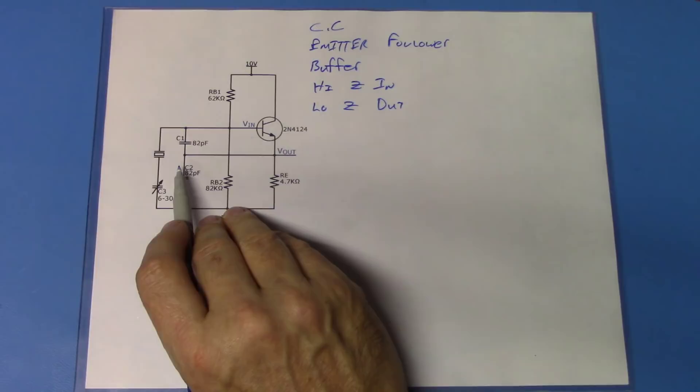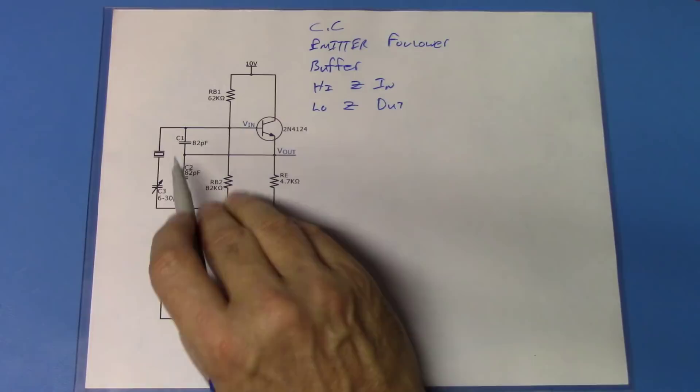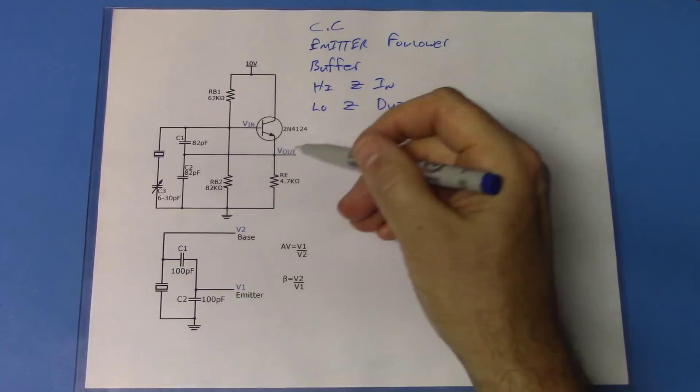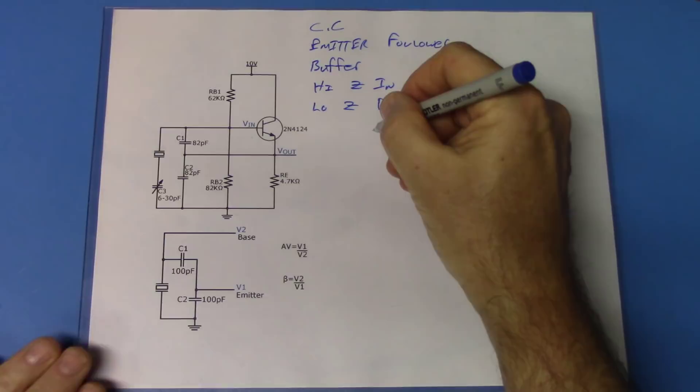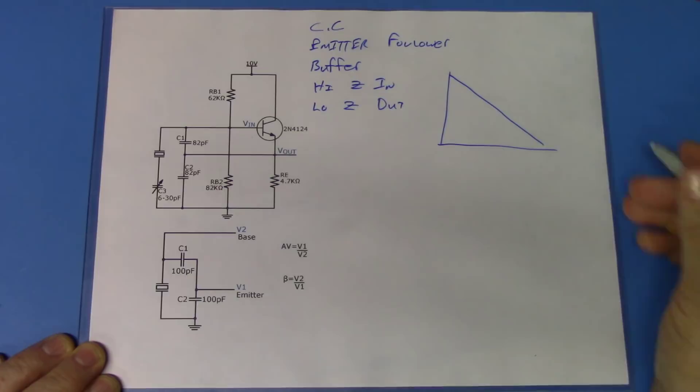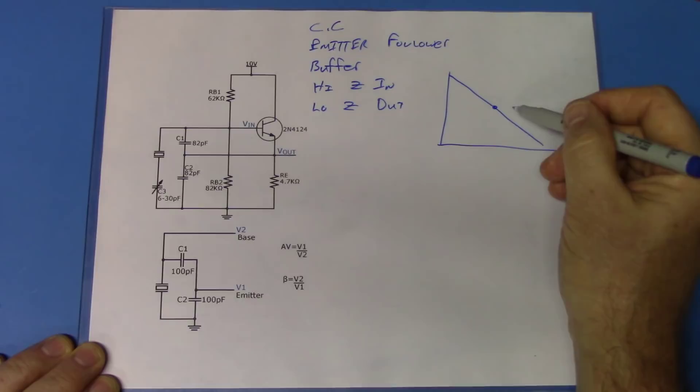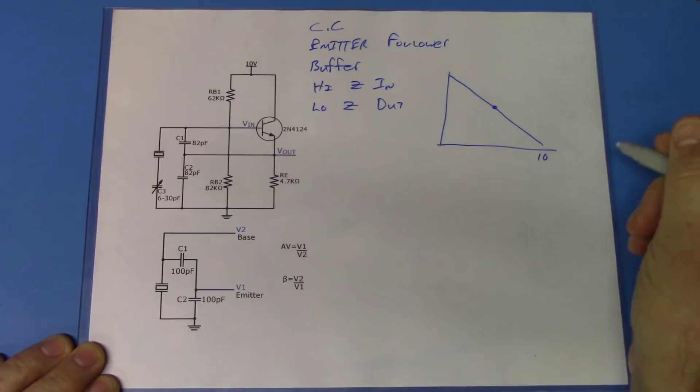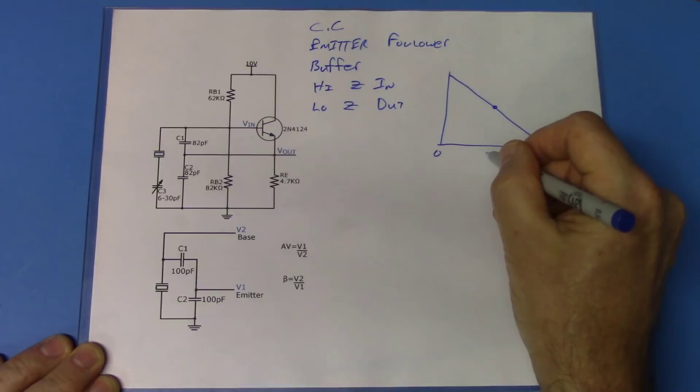When we're using a common collector or emitter follower, we want to get the most compliance out of the circuit. Compliance tells us that if we have a load line, we want to be able to go up and down it as far as we can. Cutoff is going to be 10 volts and saturation is going to be somewhere around 0 volts, so the midpoint we're looking for is about 5 volts. So we have 5 volts at the output.